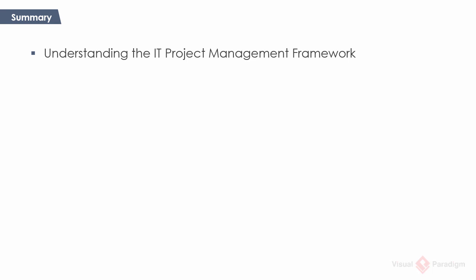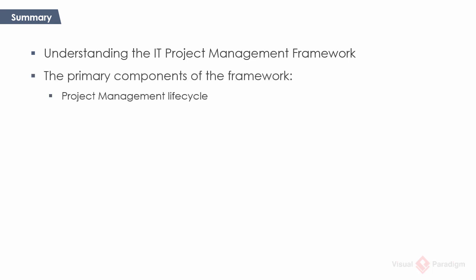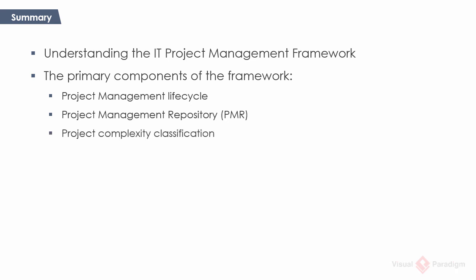The framework comprises three major components: the project management lifecycle, which consists of five distinct project phases where each phase contains a related set of activities that yield a set of project documents; the project management repository, which is a place that holds project documents and other project resources; and the project complexity classification, which helps you determine the project's complexity in order to find out the set of activities and documents to be accomplished.